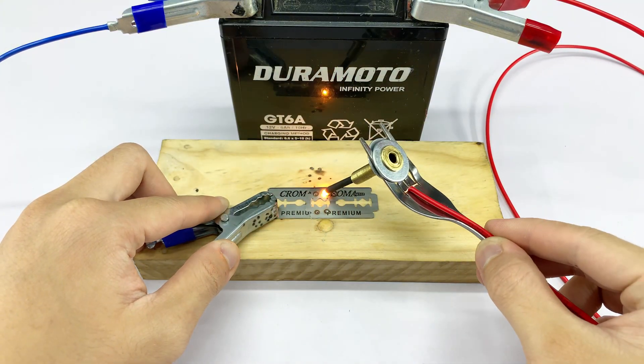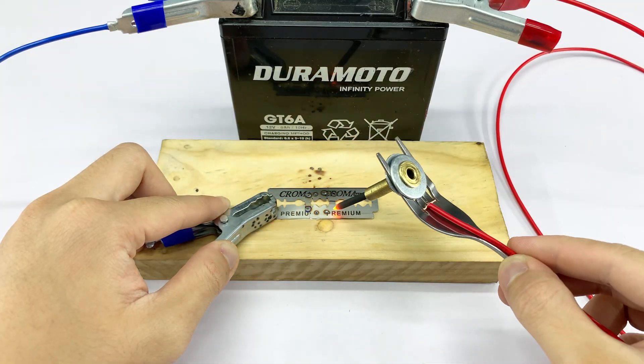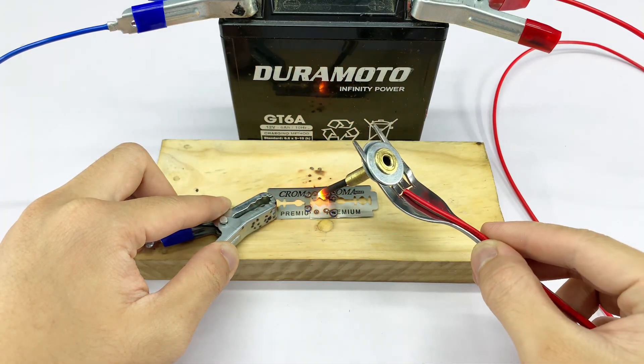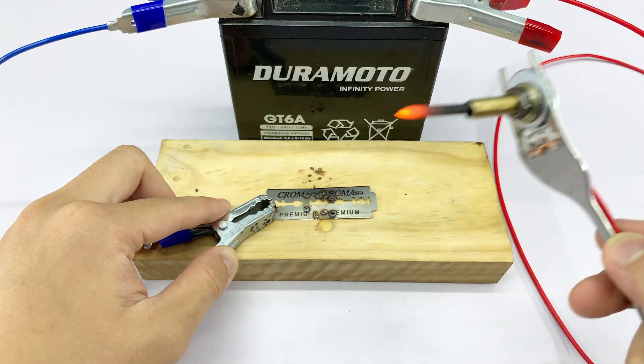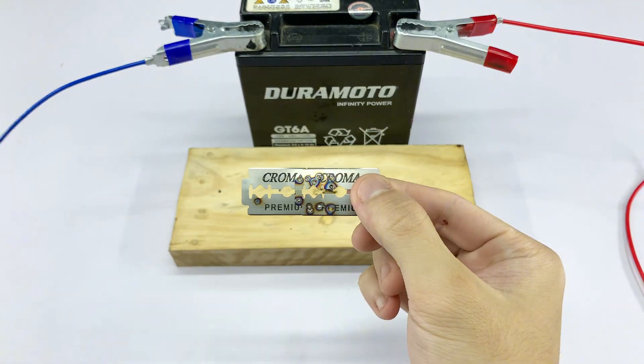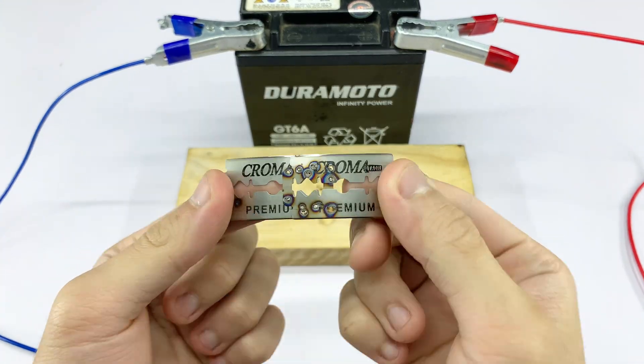The concentrated energy at the tip of the carbon rod generates intense heat, making it an effective cutter for thin metal or plastic. Look at that! It melted right through the razor blade. This is proof of the incredible heat our simple tool can generate.